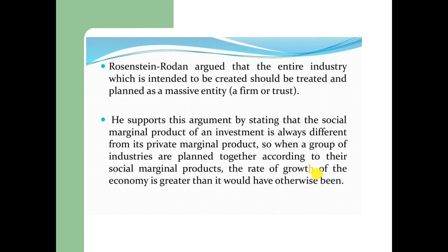Rosenstein-Rodan also argued that the entire industry which is intended to be created should be planned and treated as a massive entity. He supports this argument by stating that the social marginal productivity of an investment is always different from its private marginal product. So when a group of industries are planned together according to their social marginal productivity, the rate of growth of the economy is greater than it would have otherwise been.